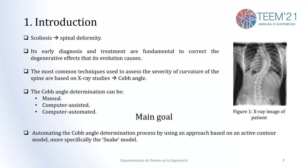Scoliosis may be defined as a spinal deformity, an example is shown in figure one over an X-ray image of a patient. Early diagnosis and treatment are fundamental in order to correct possible degenerative effects that its evolution can cause. There are several ways to assess the severity of the curvature, but the most common ones are based on X-ray studies, calculating the Cobb Angle.